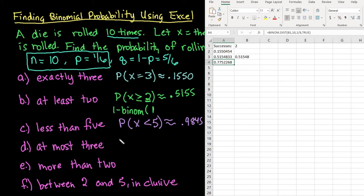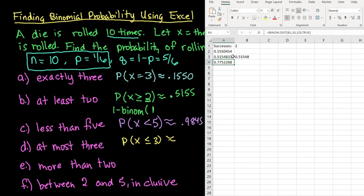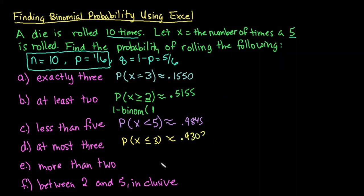For the next one, at most 3. At most means the highest that it can be. So for this one, it would be the probability that X is less than or equal to 3. And again, for this one, since I already have in this cell right here my binomial distribution, 10, 1, 6, true, for this one, we want to stop at 3. So we can write that out, and that would give me my answer, the 0.9303. If it confuses you to use another cell, all you would have had to do is type in the 3 instead.